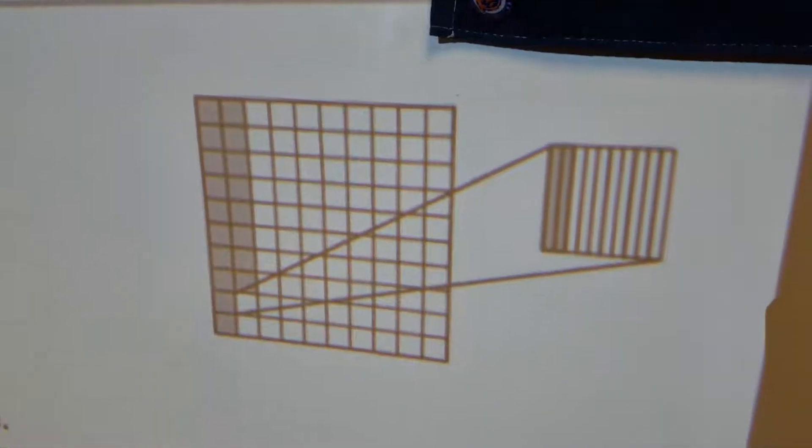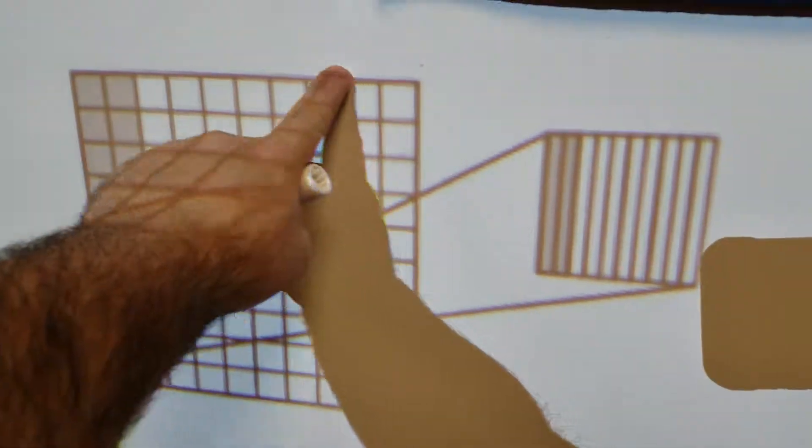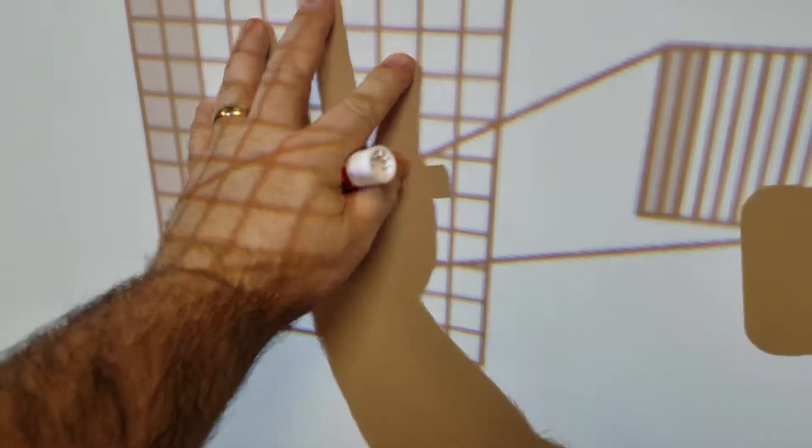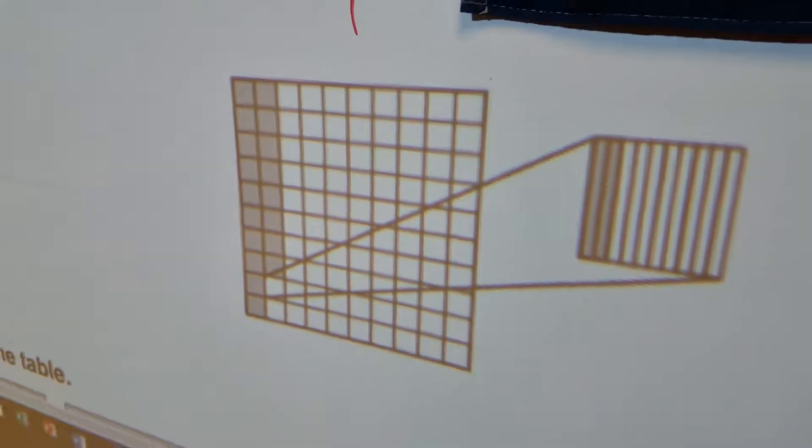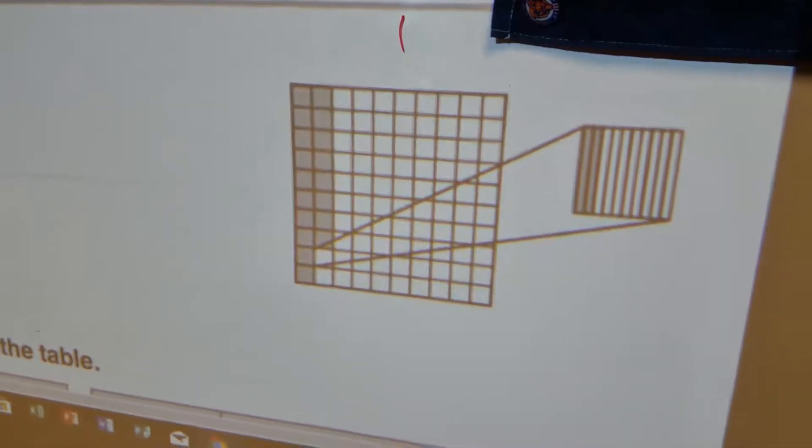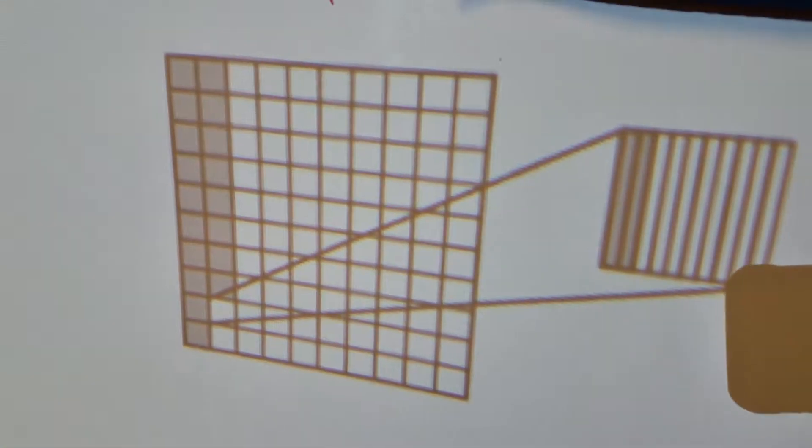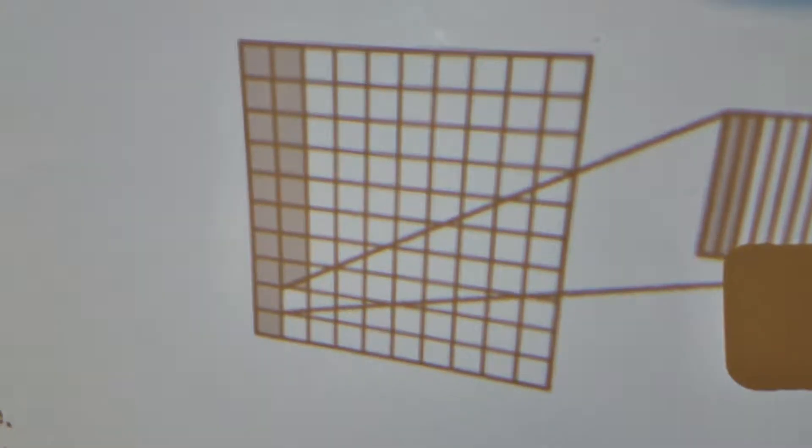Here's our model. So we have this square. Now, before we used to say this was 100 of a whole number. But now we're going to say this one square is the number one. The whole thing is the number one. So we divided this into 100 squares, because you can see it's 10 by 10. There's 100 pieces right here.